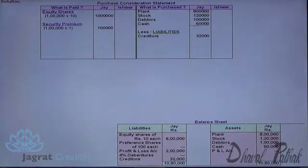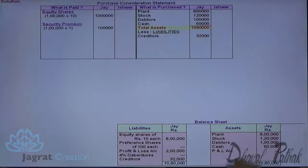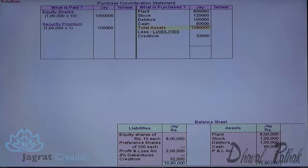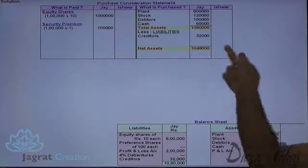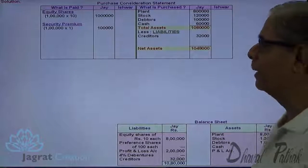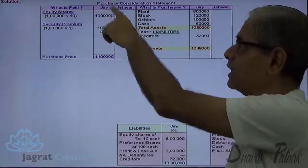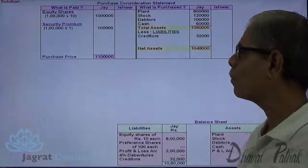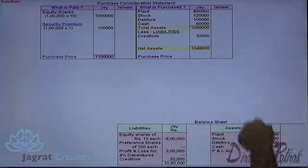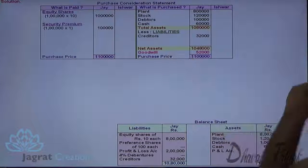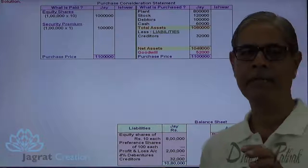Total of assets comes to 10 lakhs 80,000. Deduct creditors. Net assets are determined. Payment made is 11 lakhs. This is how the purchase price is determined on the basis of total payment made. The excess payment is known as goodwill. 52,000 is the payment made for goodwill.